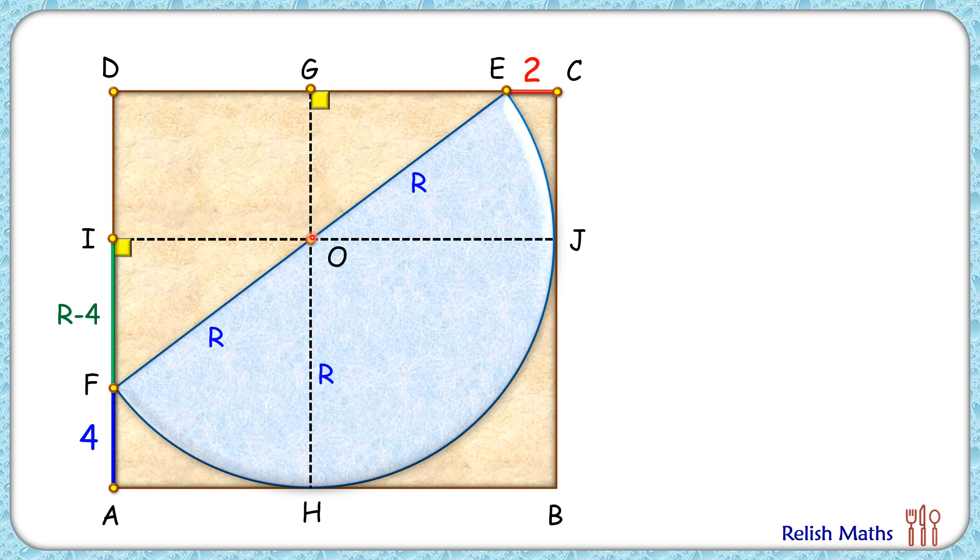Similarly the length OJ from center to this point is radius r cm, and thus GC length will be r and the remaining length GE will be r-2.